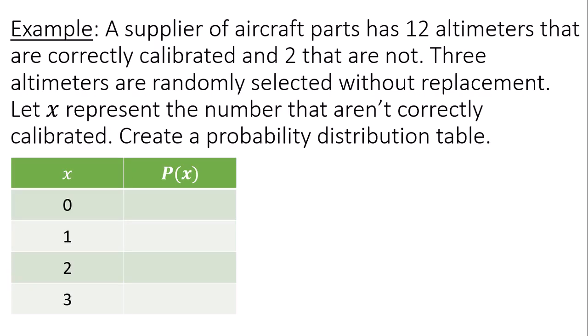We're going to do an example and make our own probability distribution table from scratch. A supplier of aircraft parts has 12 altimeters that are correctly calibrated and two that are not. Three altimeters are randomly selected without replacement. Let x represent the number that aren't correctly calibrated. Create a probability distribution table.